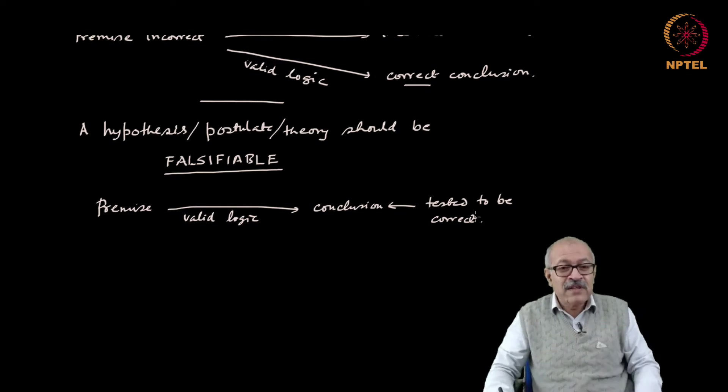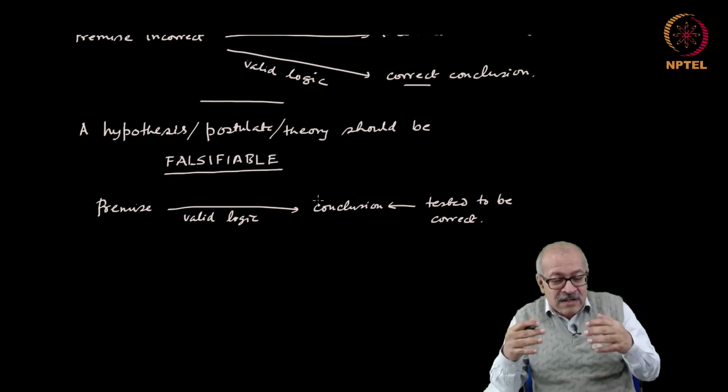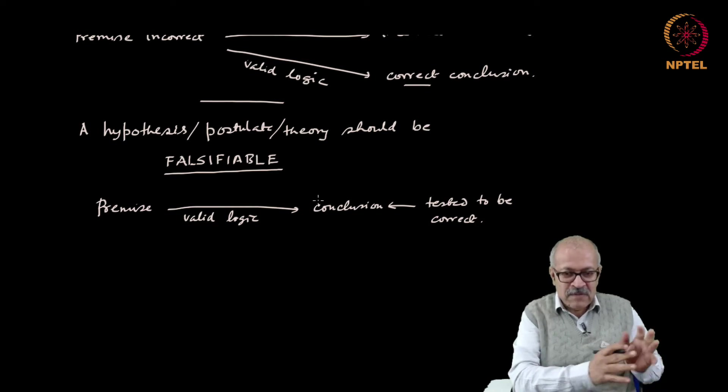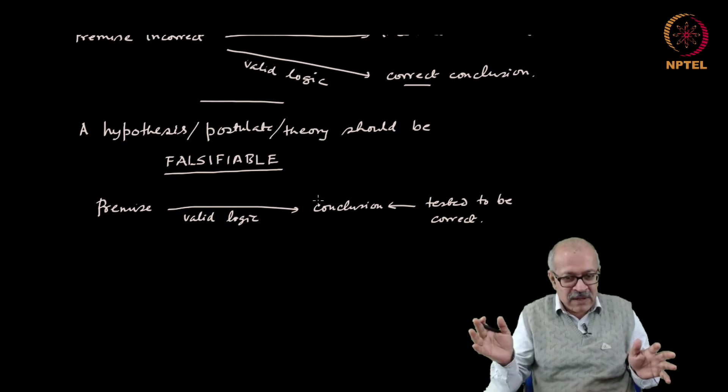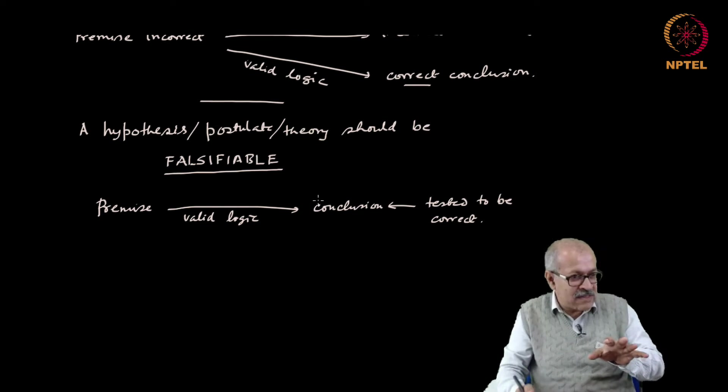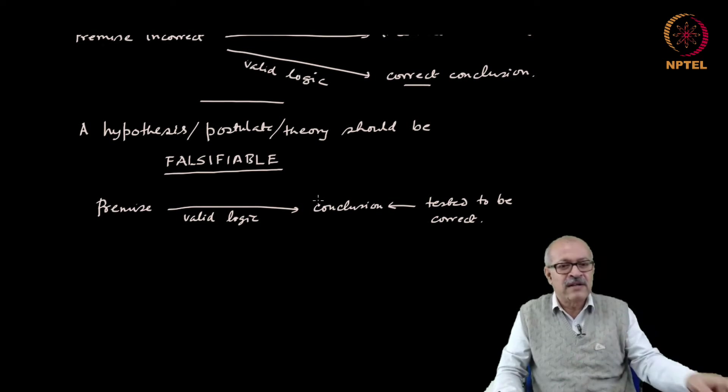because of the situation that I just told, that even if it is an incorrect premise, using valid logic you can obtain a correct conclusion. Therefore, what happened was it increased scientists' confidence in the big bang theory. People started working on the other logical consequences of big bang theory, people started researching on big bang theory, but it was still a provisional acceptance. It is not a proof of the correctness of a theory.